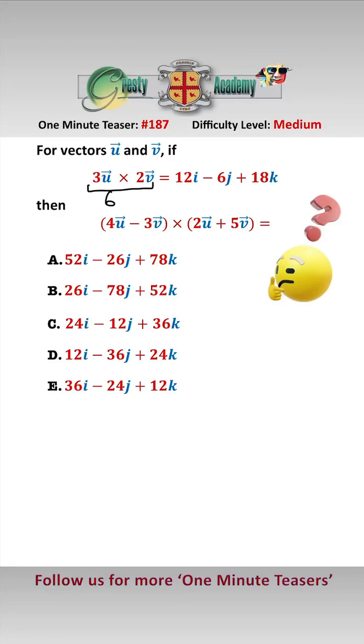So, 3u cross 2v is the same as 6u cross v, and therefore u cross v, we just divide both sides by 6, equals 2i minus j add 3k. Expanding this one under the distributive law,